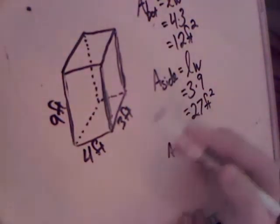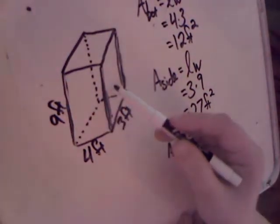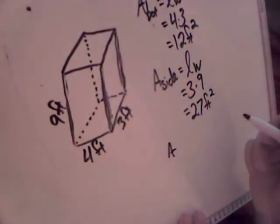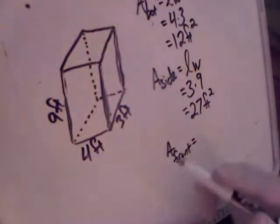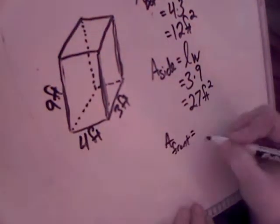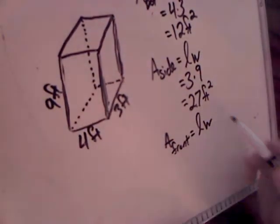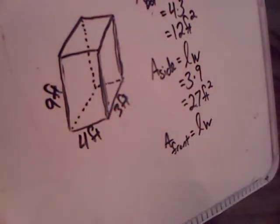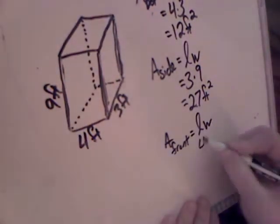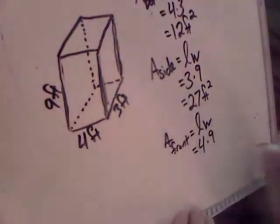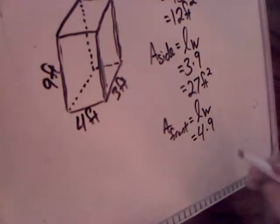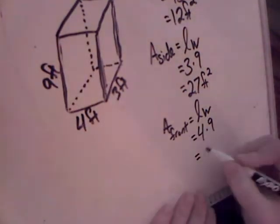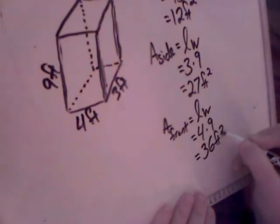Now we found the bottom, we found the side, now we need to find the front. The area of the front — the front is still a rectangle, so it's still going to be length times width. Remember to write length as cursive so you don't confuse it with the number 1. The length is 4, the width is 9. Remember that length and width are interchangeable. 4 times 9 is 36 feet squared.